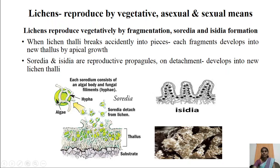Isidia generally consist of a number of algal cells covered by fungal hyphae. When they detach from the mother lichen thallus, they are carried away by wind. When they fall on a suitable substratum, these isidia develop into new lichen thalli.